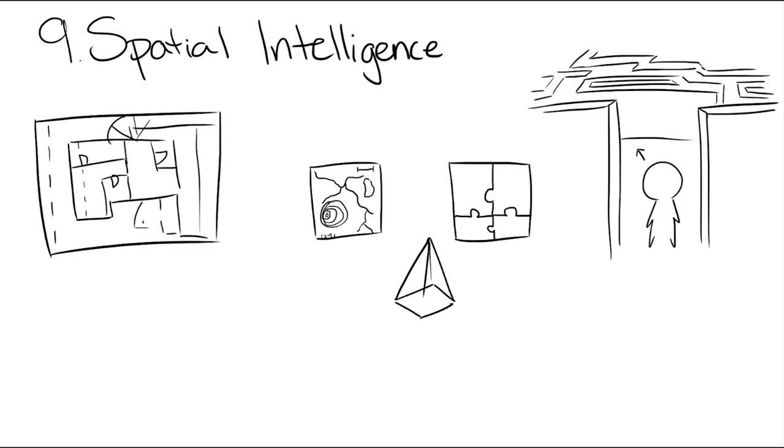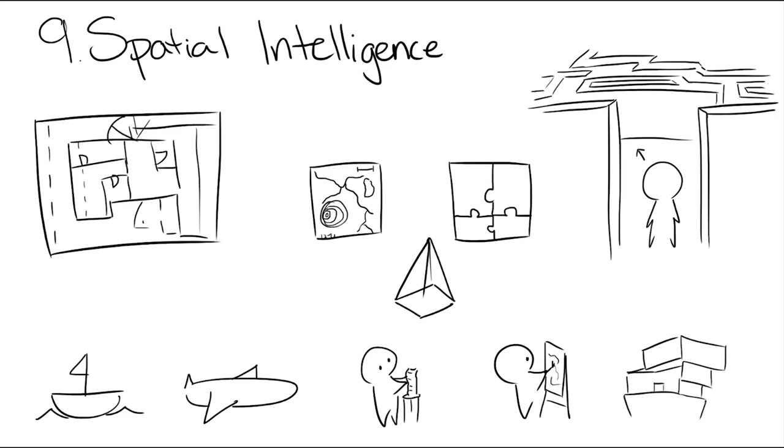People with this skill are often good at sailing, being a pilot, sculpting, painting, or designing architectural features and spaces. Young people with good spatial intelligence are often drawn to visually stimulating activities, like drawing.